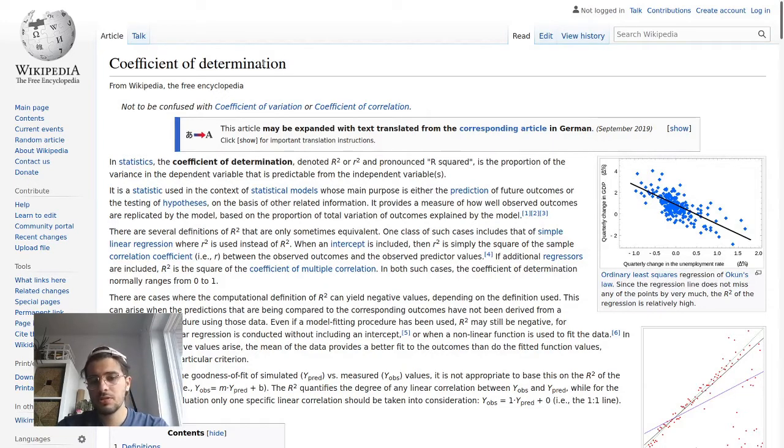The coefficient of determination is a metric that you will see if you're reading a paper that is doing some sort of linear regression thing, some sort of regression analysis.